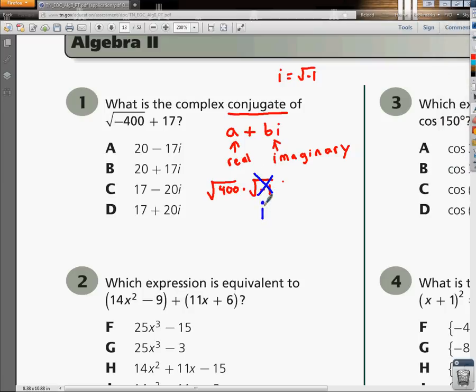When you plug into your calculator the square root of 400, it's just going to give us 20.